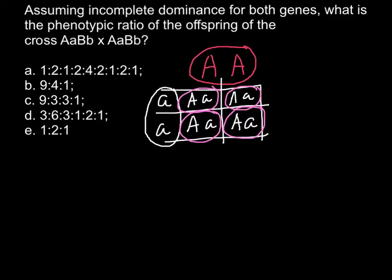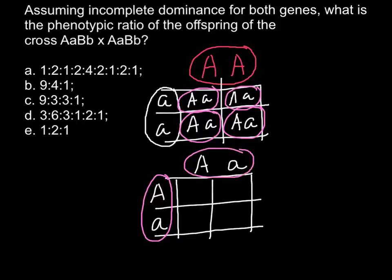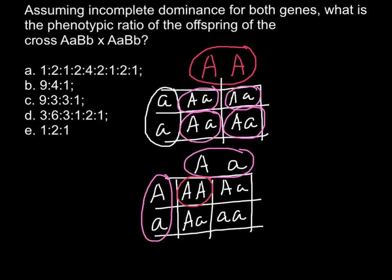Here's another example. If we take a parent that is capital A, small a, and cross it with another parent that is capital A, small a — and as you see from the previous example, such parents would have pink flowers — we get capital A capital A, capital A small a, capital A small a, and small a small a. So one quarter would be red, one quarter would be white, and two out of four would be pink, just like their parents. This is incomplete dominance.